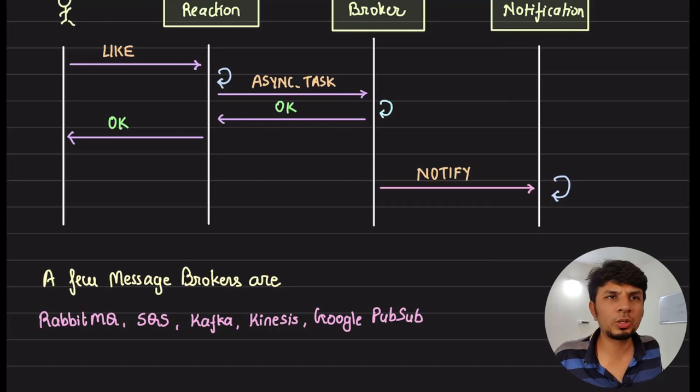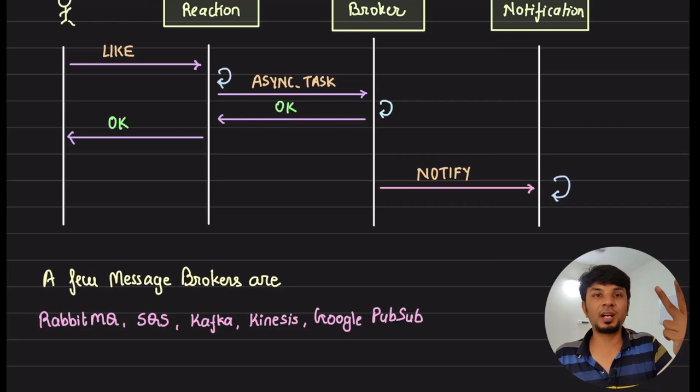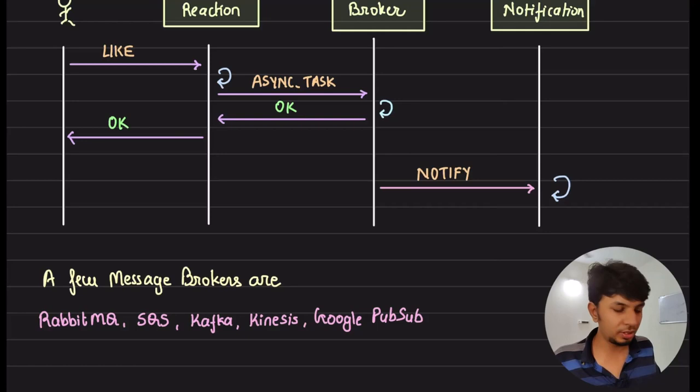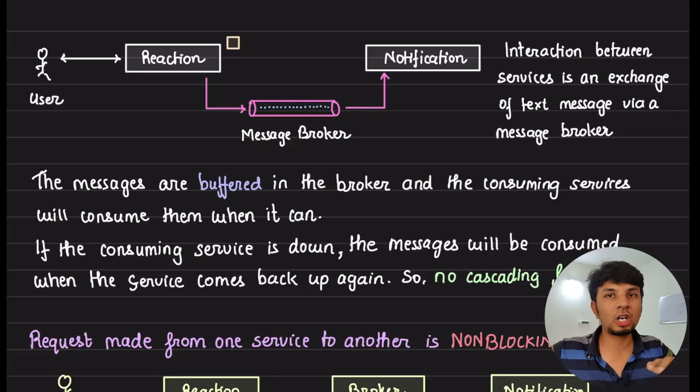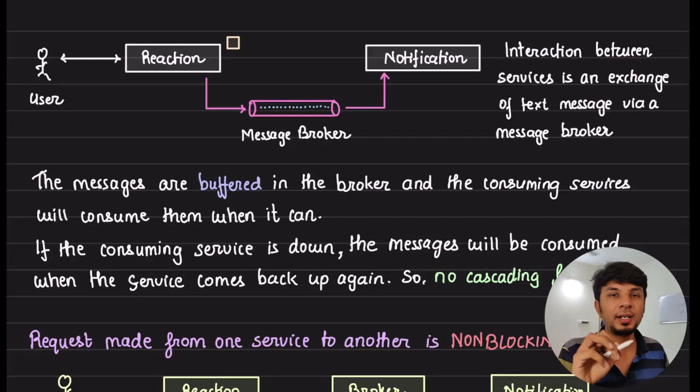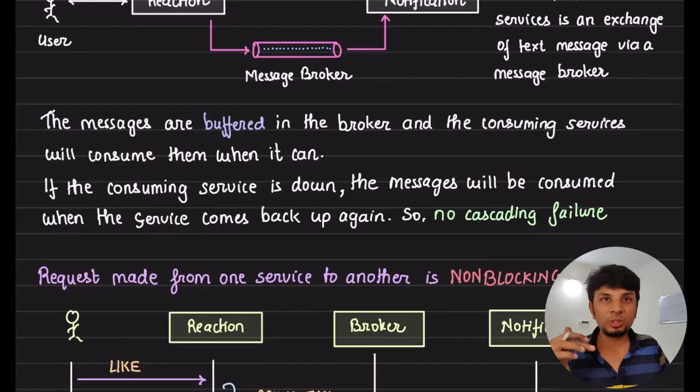Technologies you can use as a message broker include RabbitMQ, SQS, Kafka, Kinesis, and Google Pub/Sub — many options available out of the box. Each has separate properties, and we'll cover which to use and why in a future video. The core idea is that adding this buffer removes cascading failures, makes things lean and efficient, and this is one of the main reasons why a lot of systems have scaled.